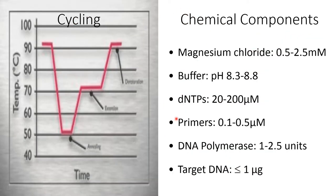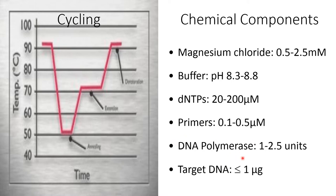The chemicals required for the PCR reaction are: magnesium chloride ranging from 0.5 to 2.5 millimolar, buffer with a pH ranging from 8.3 to 8.8, dNTPs ranging from 20 to 200 micromolar, primers ranging from 0.1 to 0.5 micromolar, DNA polymerase at 1 to 2.5 units, and target DNA of approximately 1 microgram.